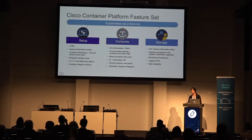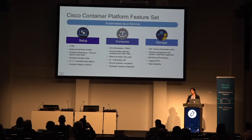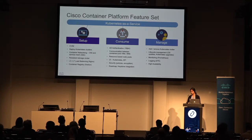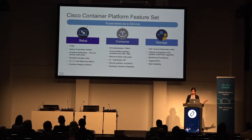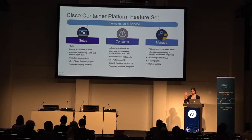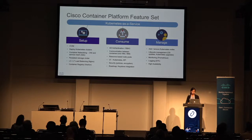CCP features include deploying multiple clusters on any infrastructure, and complete lifecycle management: OS image provisioning for VMs or bare metal nodes, OS upgrades, patch application, Kubernetes installation and upgrades, add-on service installation and upgrades, and repair operations. If a physical host goes down, CCP automatically detects it and starts a new node in a different location. CCP also integrates with Active Directory and AWS IAM, so applications running on-prem and in AWS can use the same IAM. Keystone integration for CVIM is a future roadmap item.